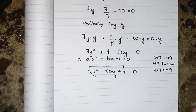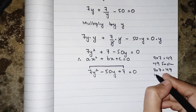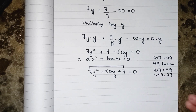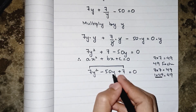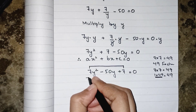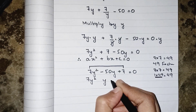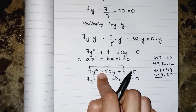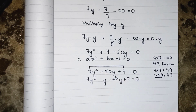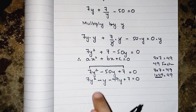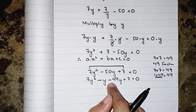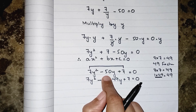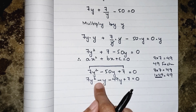We write the factors of 49: 7 multiplied by 7, and 1 multiplied by 49. By adding them we will get the middle term. In place of 50 we write 1 and 49, giving 7y² minus 49y minus y plus 7 equals to 0. The greater value gets the minus sign and the smaller gets the plus, so we get minus 49y minus y which gives minus 50y.